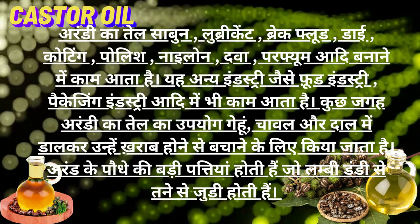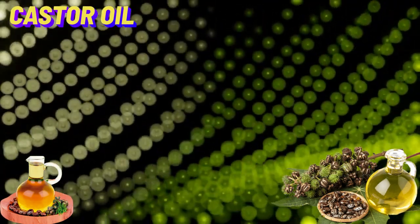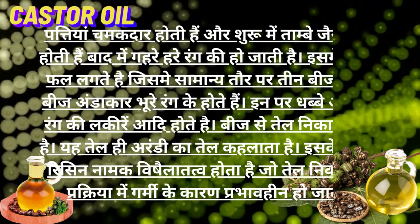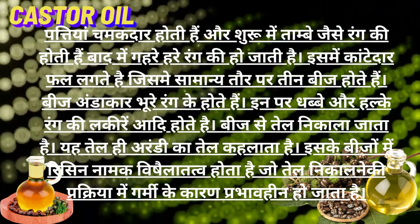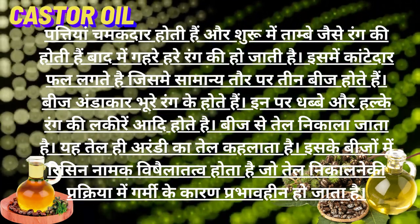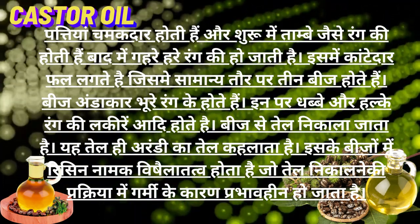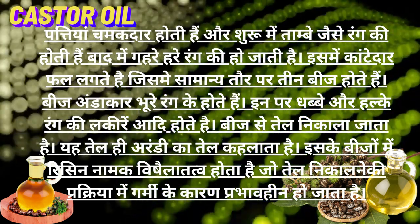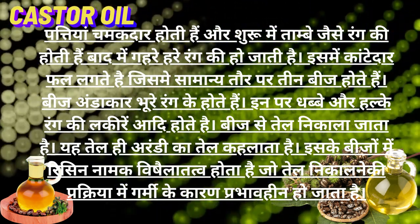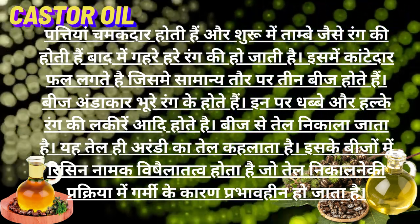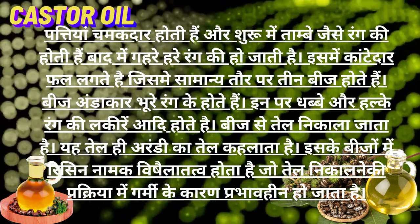Arand ke paudhe ki badi pattiyan hoti hain, jo lambi dandi se tane se judi hoti hain. Pattiyan chamakdar hoti hain aur shuru mein taambey jaise rang ki hoti hain, baad mein gehre haare rang ki ho jaati hain. Ismein kaantedaar phool lagte hain, jismein saamanytah 3 beej hote hain. Beej andaakar bhoore rang ke hote hain, jinpar dhabbe aur halke rang ki lakirein hoti hain. Beej se tel nikala jaata hai, yahi arandi ka tel kehlata hai.